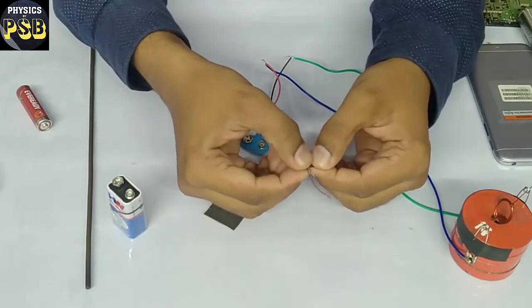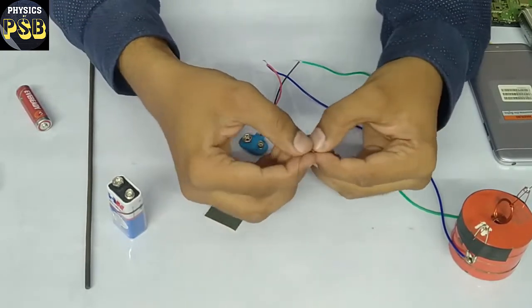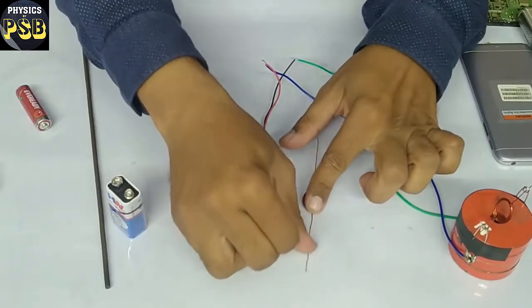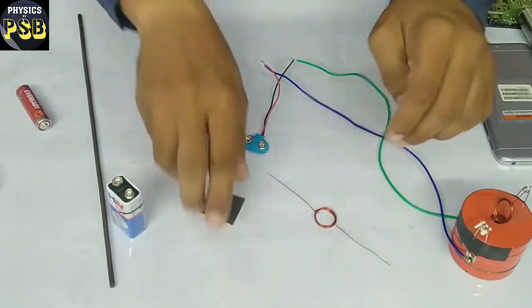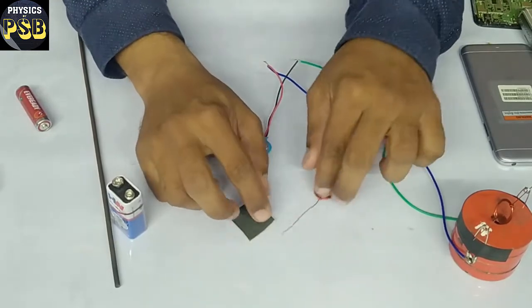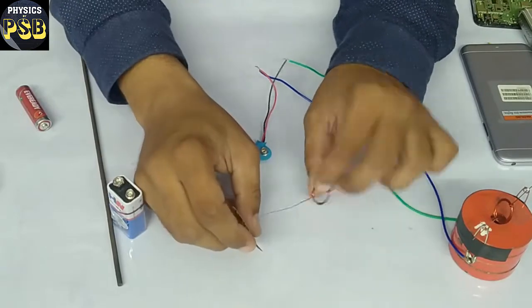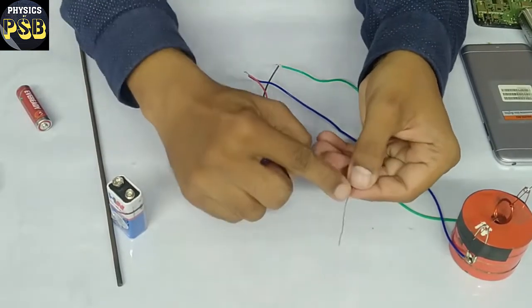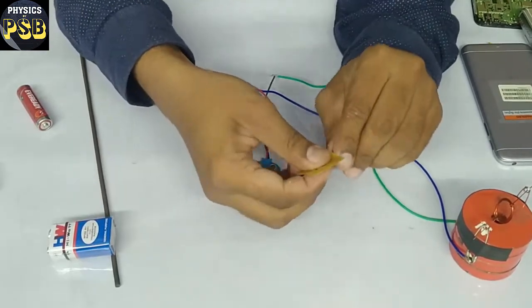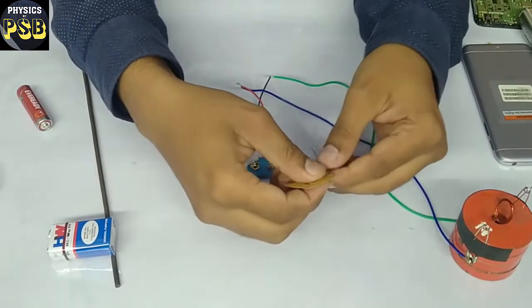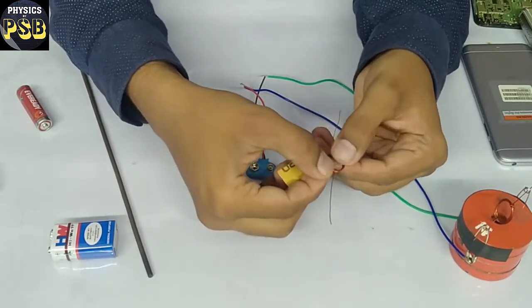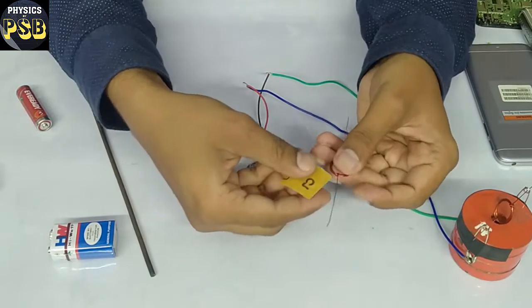Okay, now our armature is almost ready. Make it straight then use a small piece of sandpaper. One side, remove the enamel completely. Remove it completely from one side.